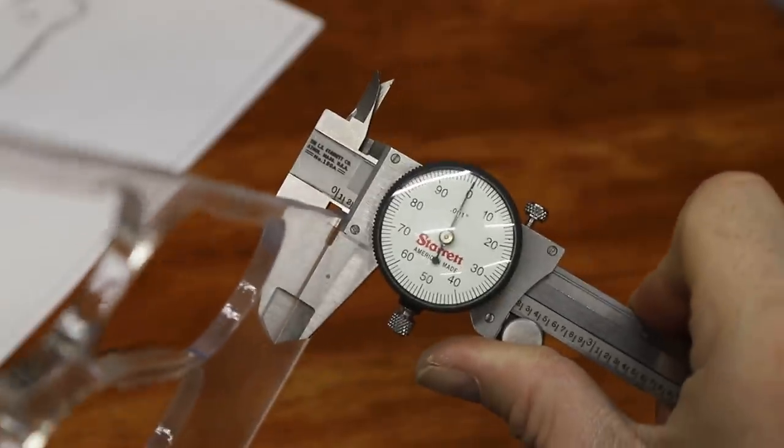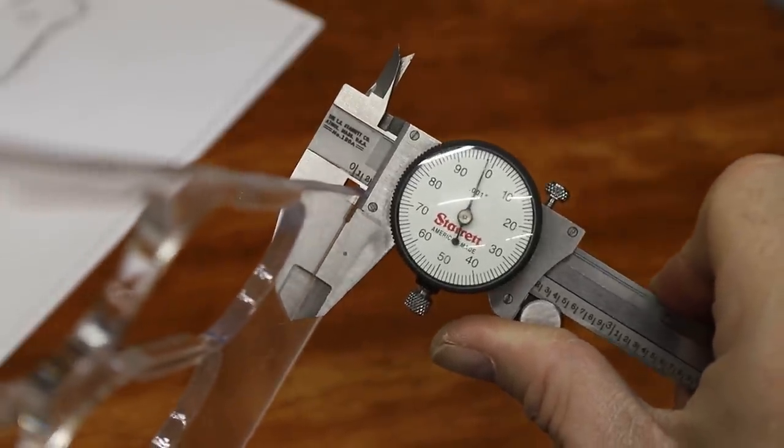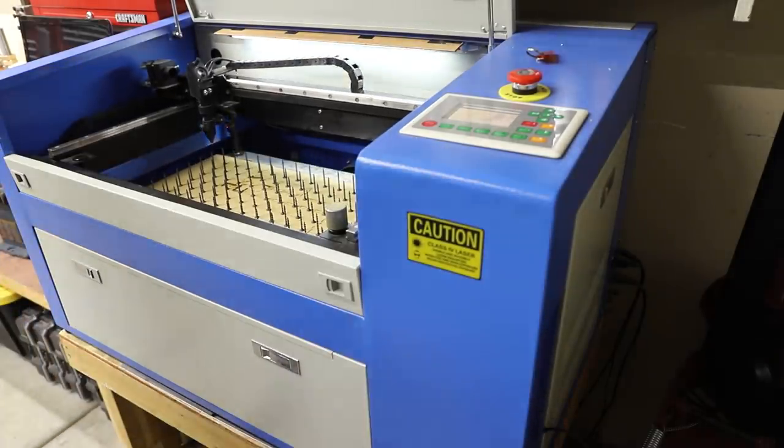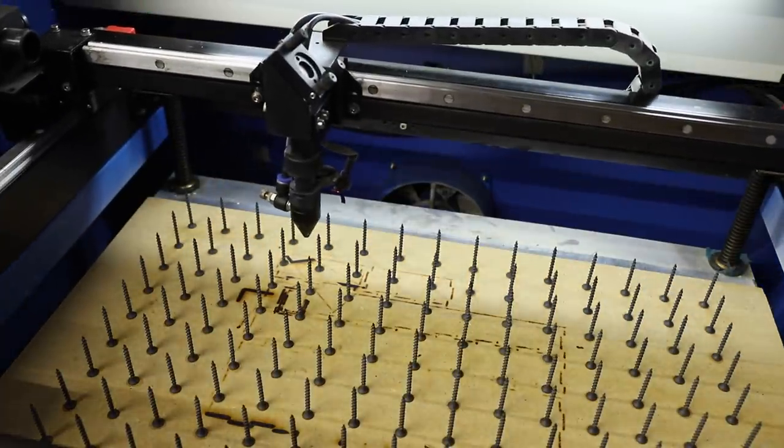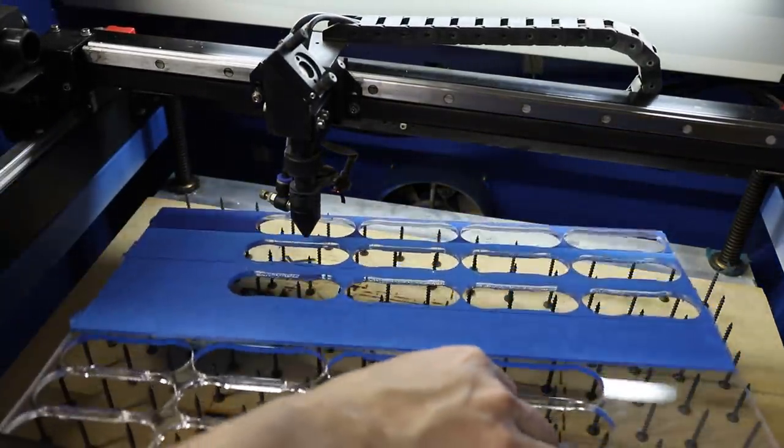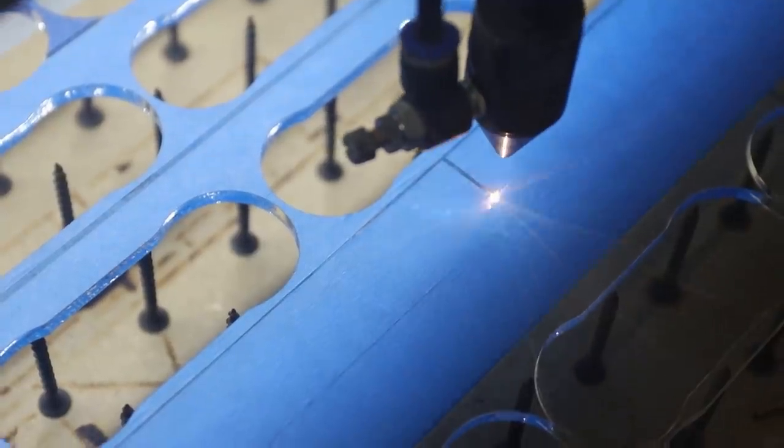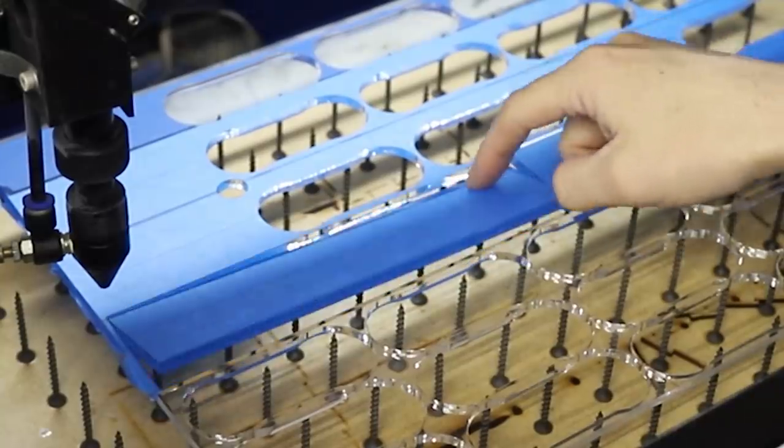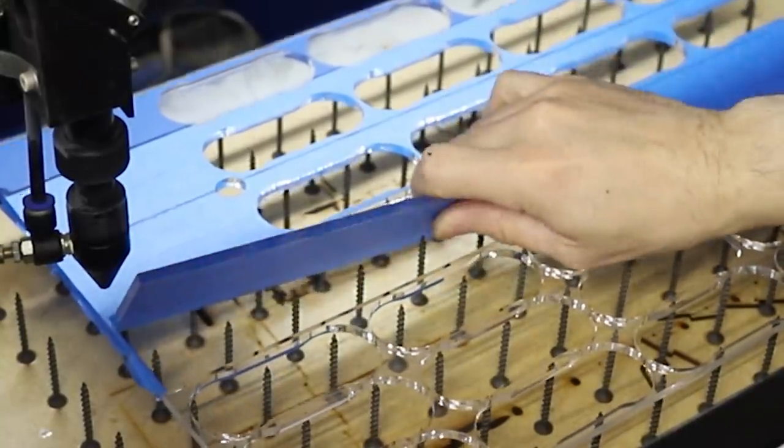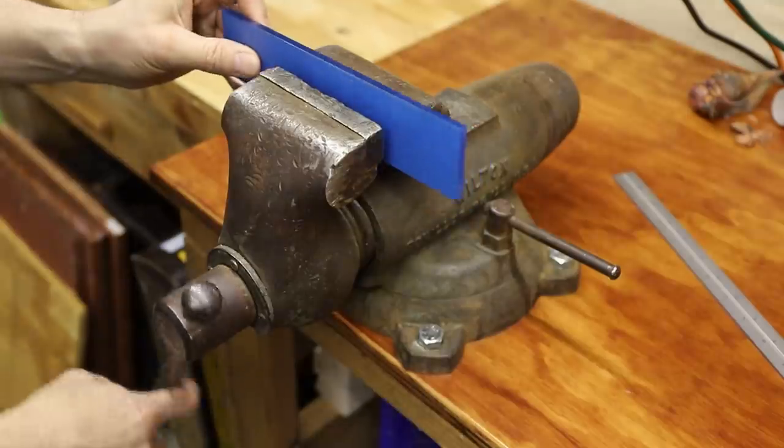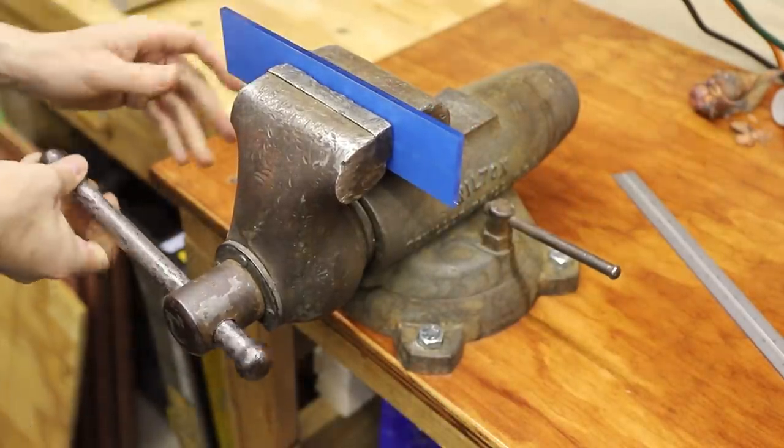I had this sheet of acrylic laying around that I used to make some fidget spinners a few years ago back when that was a thing. It's just about the right thickness and the quickest way to cut it was just to use my CO2 laser cutter. I'll be using this piece as a pattern to make a sand mold so I filed a slight bevel on each edge so that I could more easily remove it from the mold.